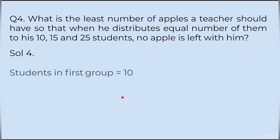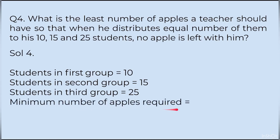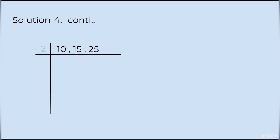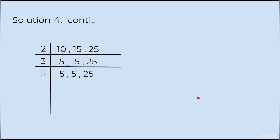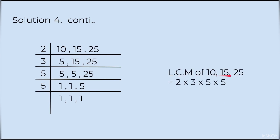Information given: students in first group = 10, second group = 15, third group = 25. Minimum number of apples = LCM of 10, 15 and 25. Divide by 2 → 5, 15, 25. Divide by 3 → 5, 5, 25. Divide by 5 → 1, 1, 5. Divide by 5 again → all 1s. LCM = 2 × 3 × 5 × 5 = 150. Answer: 150 apples.